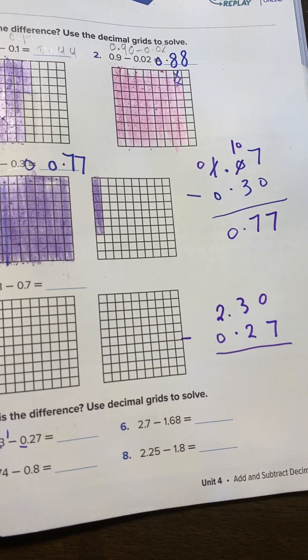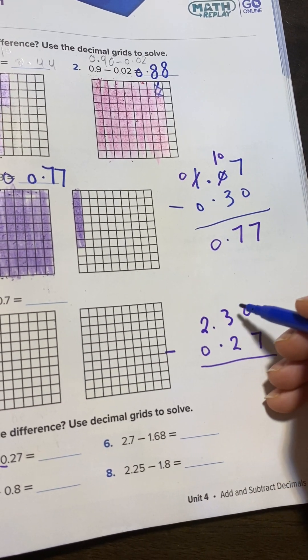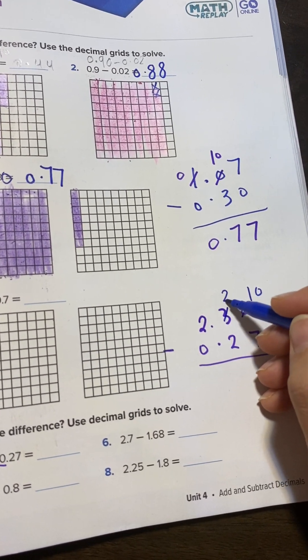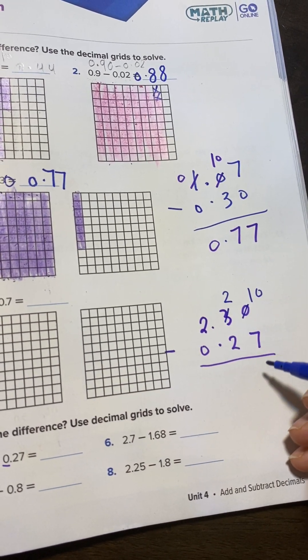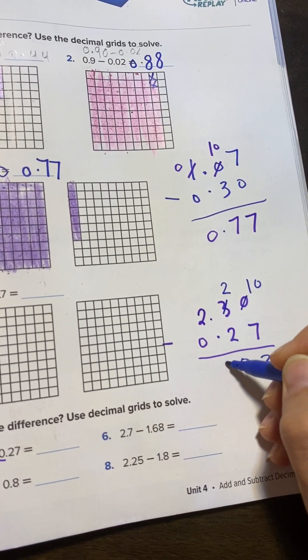0 will become 10, 3 will become 2. 10 minus 7 is 3. 2 minus 2 is 0. Decimal is going down. 2 minus 0 is 2. So the answer here is 2.03.